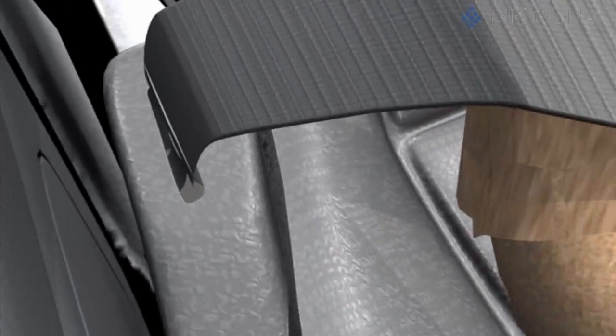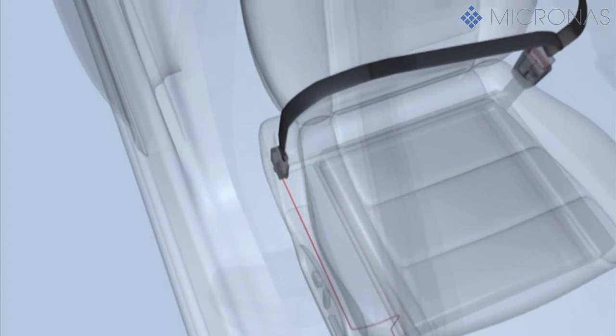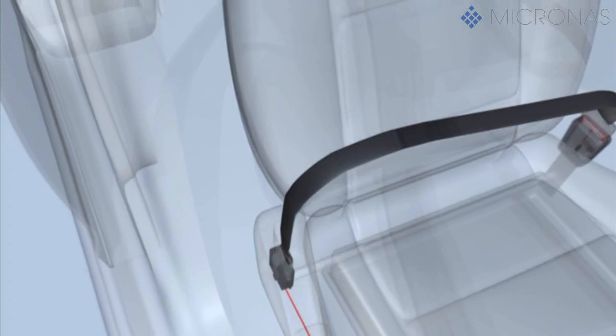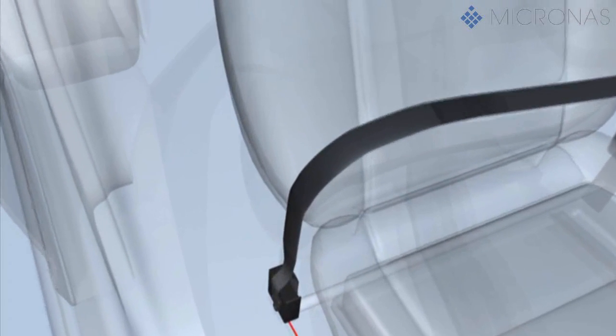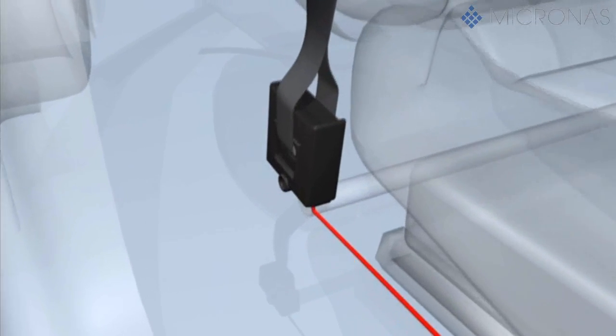Due to the seat belt attachment, this weight measurement can cause a force shunt with the effect that the weight detection is no longer reliable. In cases such as this, the force shunt must be measured by an additional seat belt force sensor.